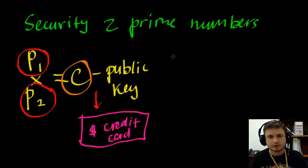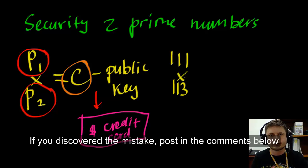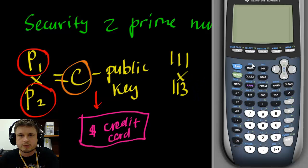So let's discover if this is actually a secure method. So let's just take two random prime numbers. I'm going to take 111 and then I'm going to take 113 and cross multiply them. We're going to use our graphing calculator to try to solve this problem. I'll show you how to do this.